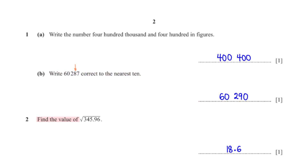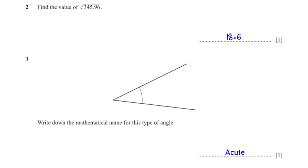Find the value of the square root of three hundred and forty-five point nine six. When we type this into the calculator we get eighteen point six. Write down the mathematical name for this type of angle. The angle shown is less than ninety degrees, and an angle less than ninety degrees is an acute angle.